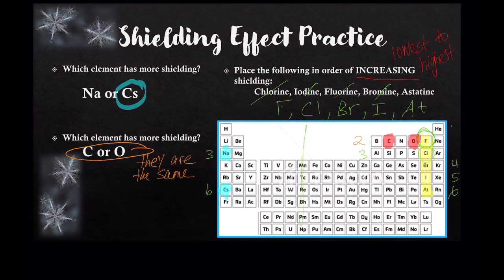To sum up: as we go down a group, shielding effect increases. Left to right across a period, it stays the same.